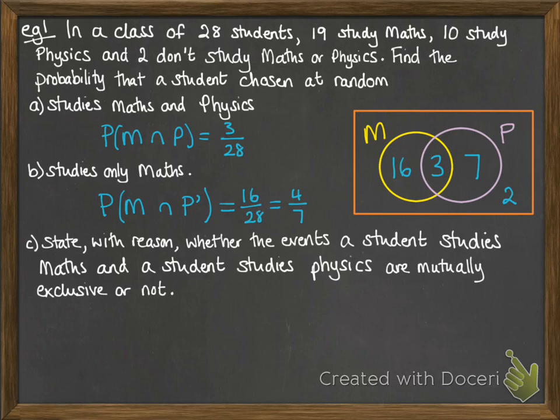And then state with reason whether the event that a student studies maths or a student studies physics are mutually exclusive or not. Well, we can show that the probability of maths and physics is not equal to zero. That was part A. So therefore, it's not mutually exclusive.